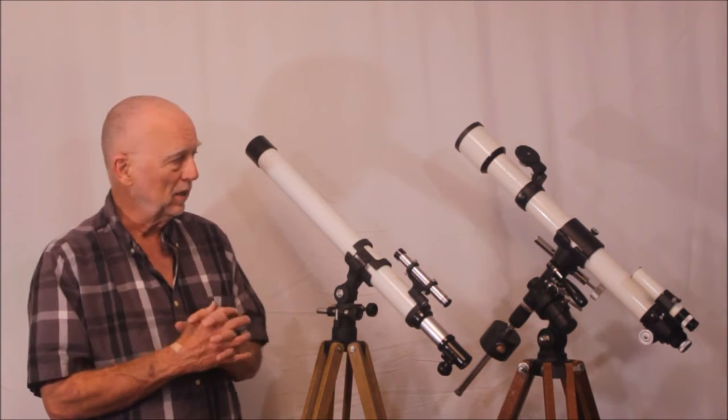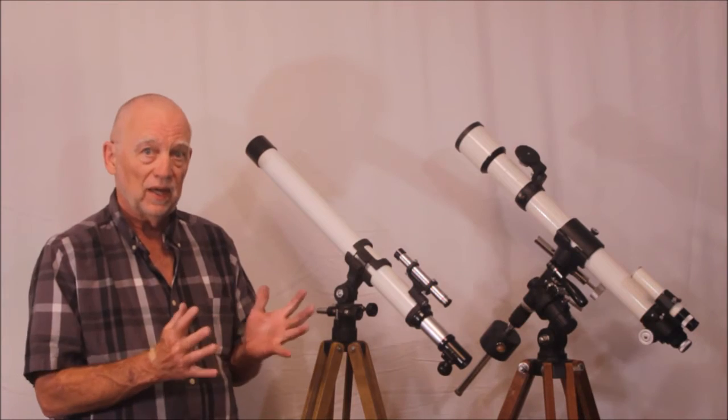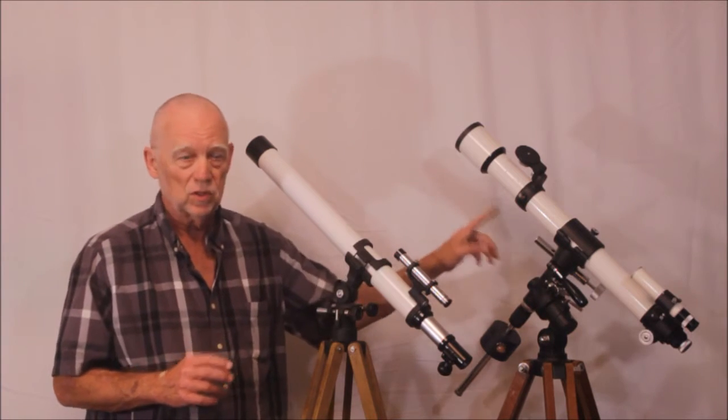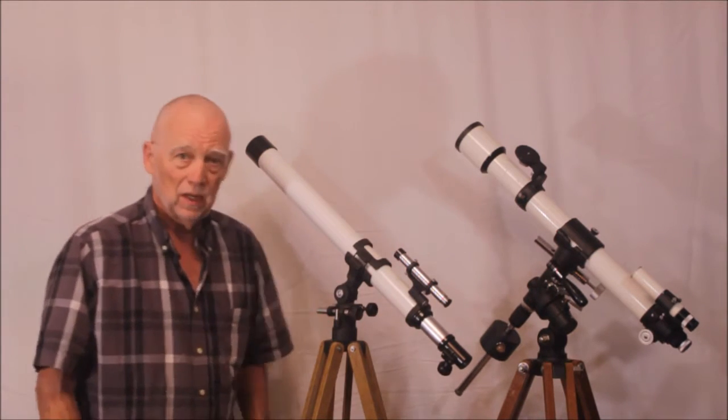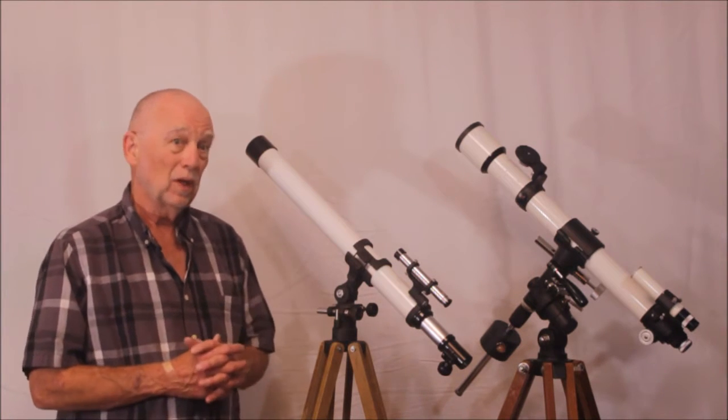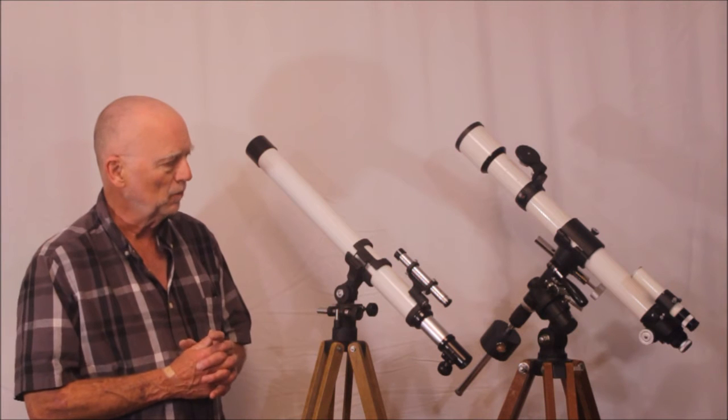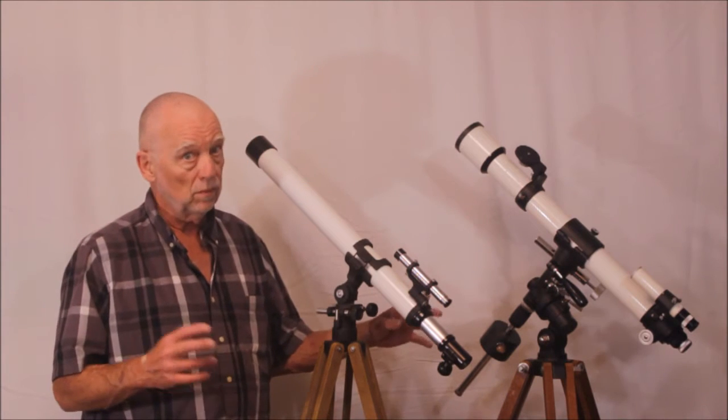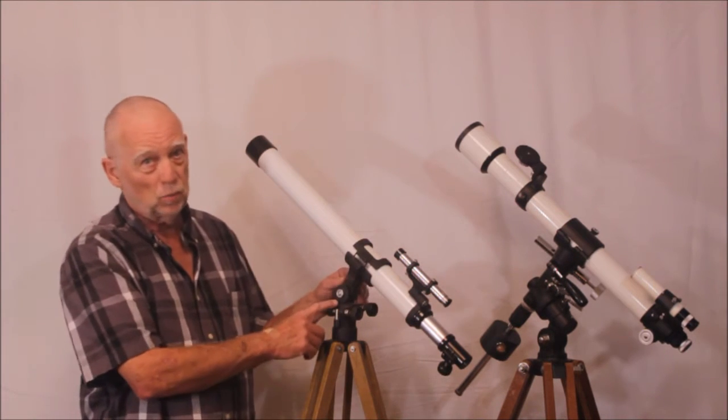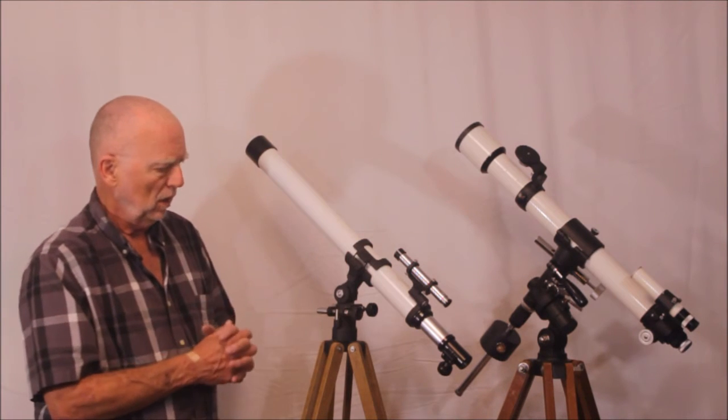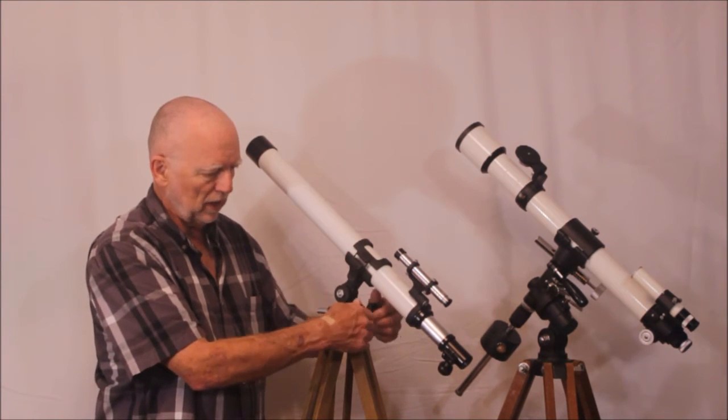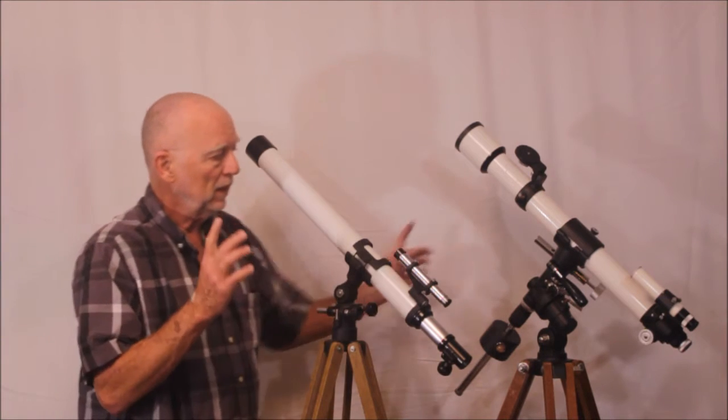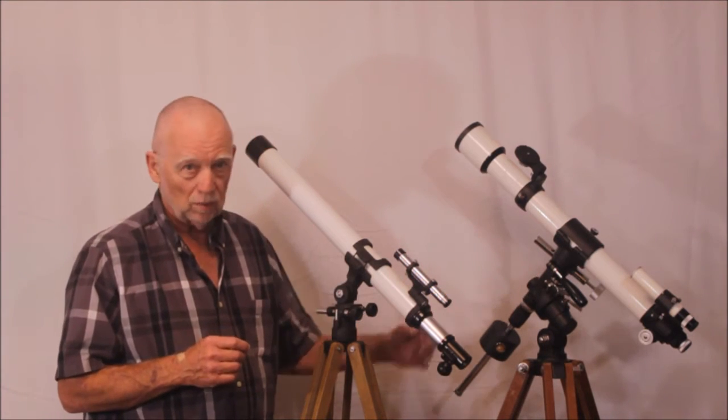Several very big distinctive differences right away. First of all, the heft, the sheer weight of both of these. The Takahashi weighs at least twice as much. Doesn't necessarily mean it's a better scope, but in terms of a mount, it very well may mean that it's a better telescope. The Takahashi is an equatorial mount, which is much nicer than an alt-az. This is a superb alt-az mount. The Unitron is wonderful and very, very nice. And for a lightweight telescope you're gonna carry around, very, very convenient, very nice.